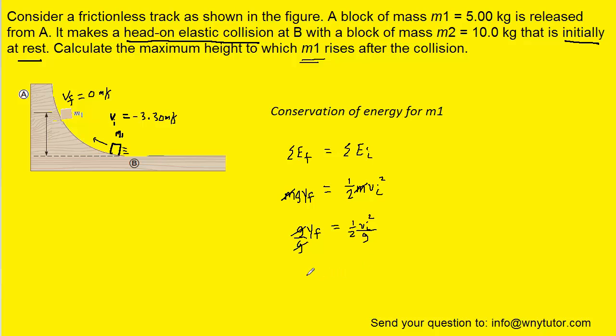So the final height would be equal to, let's see, 1 times the initial velocity squared would just be vi squared. And then that would be divided by 2g.